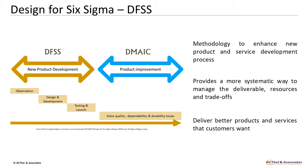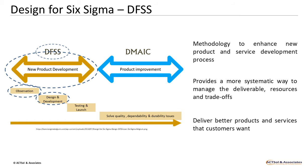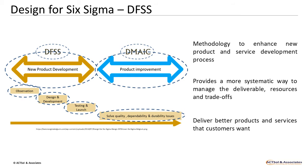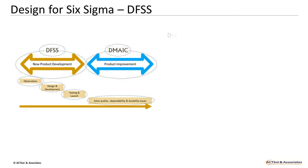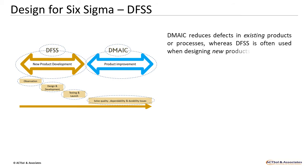DFSS is used for new product development. It contains observations, design and development, testing, and launch. DMAIC is used for product improvement — it solves quality, dependability, and durability issues. So, DMAIC reduces defects in existing products or processes, whereas DFSS is often used when designing new products and services.